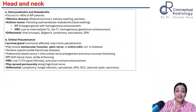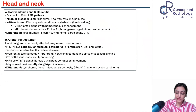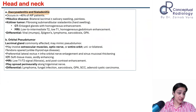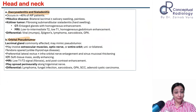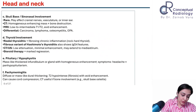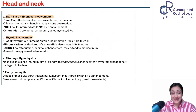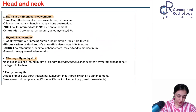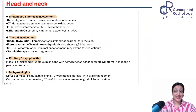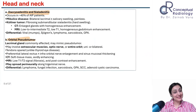Starting from the top: head and neck involvement is divided into six headings — dacryoadenitis and sialadenitis (salivary glands), orbital pseudotumor, skull base or sinonasal involvement, thyroiditis (Riedel's thyroiditis), pituitary involvement, and pachymeningitis.